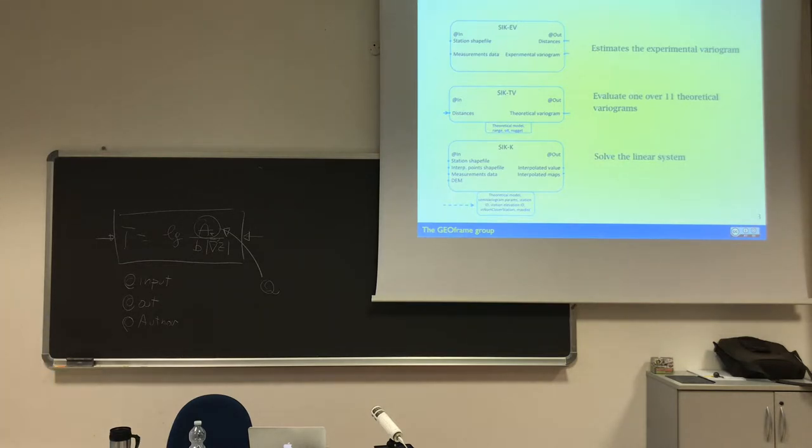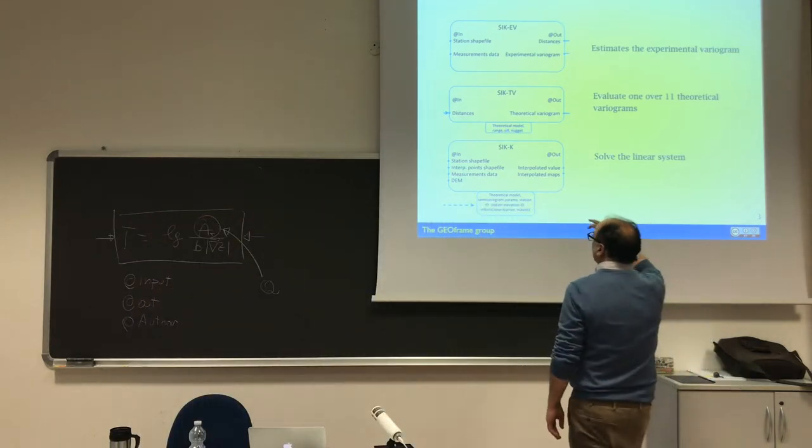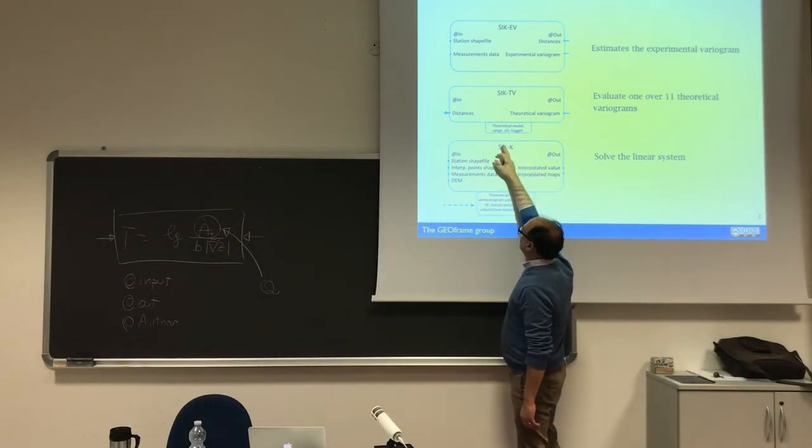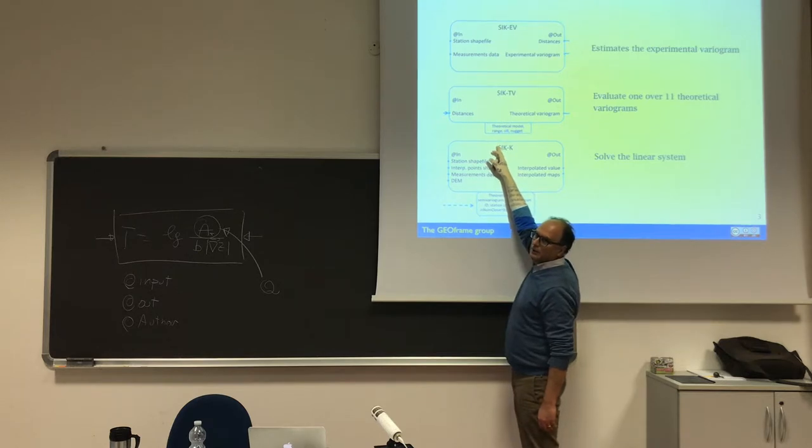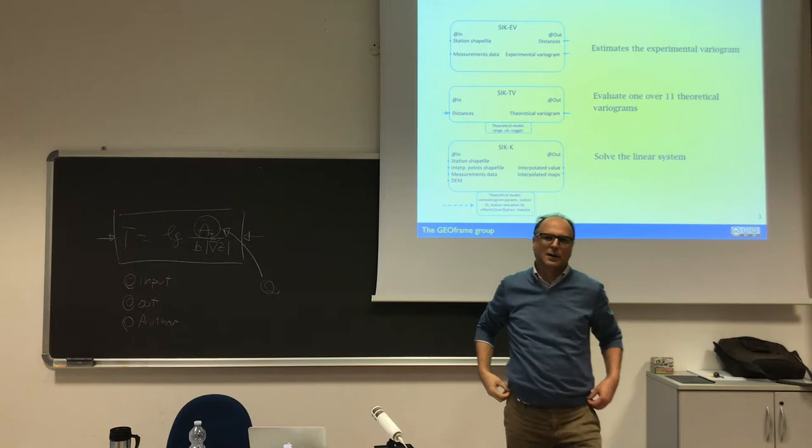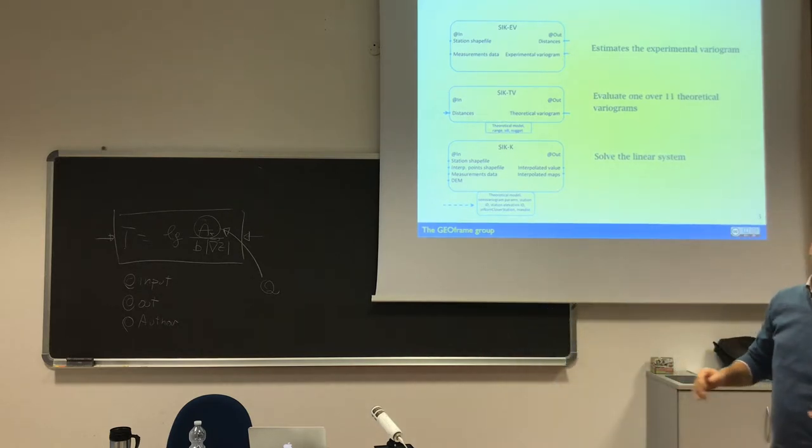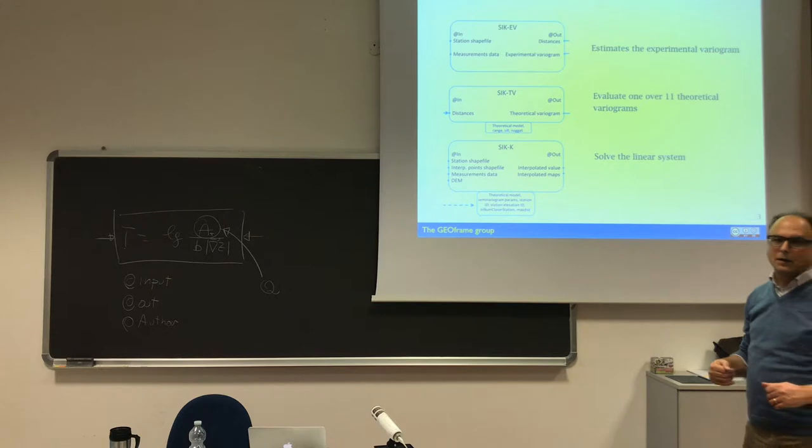Meaning that actually you have some other parameters here. One is the range, one is the sill and the nugget. I don't tell you right now what it is, but tomorrow we do some kriging, meaning we explain what are these terms. There are some more parameters to fit, and we go with this magic curve, which is the theoretical variogram that allows us to solve the linear system.